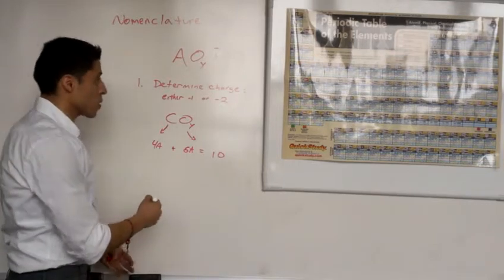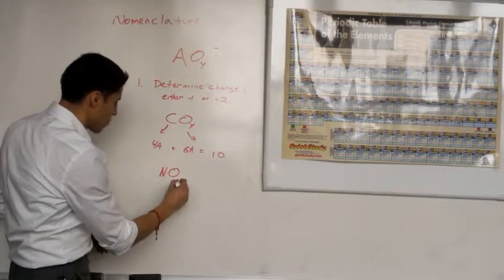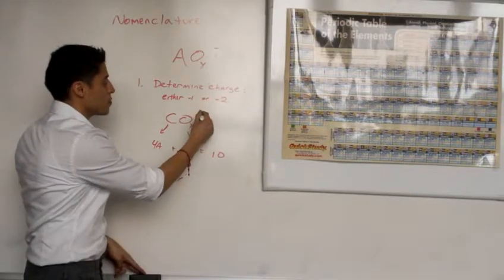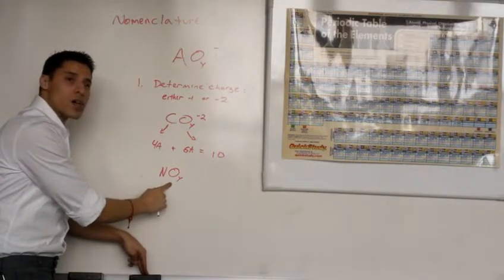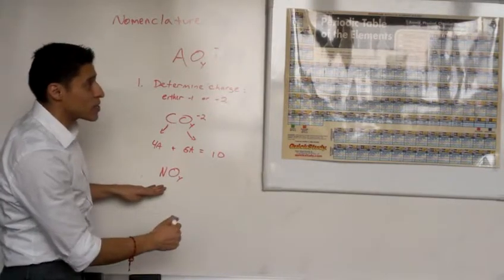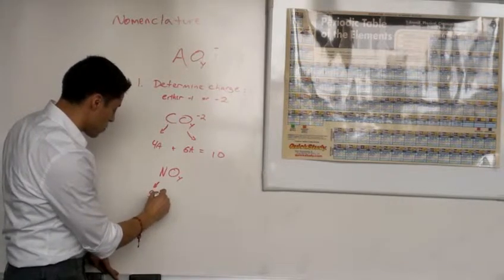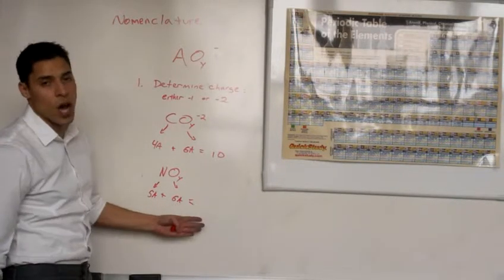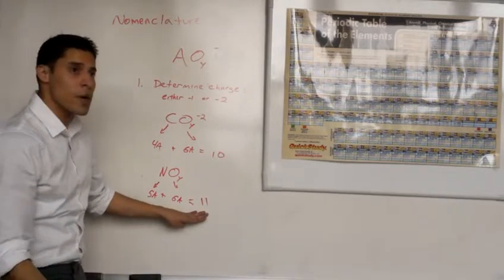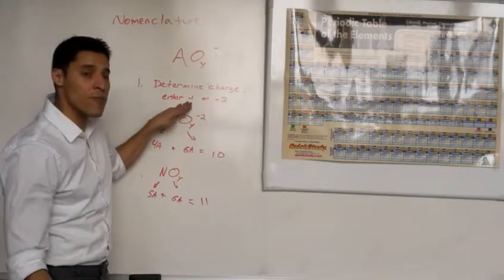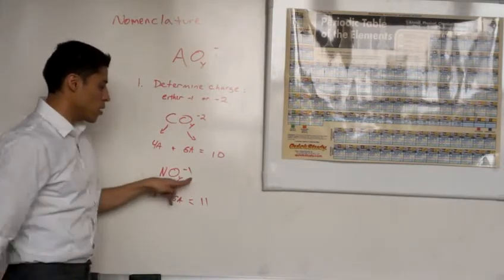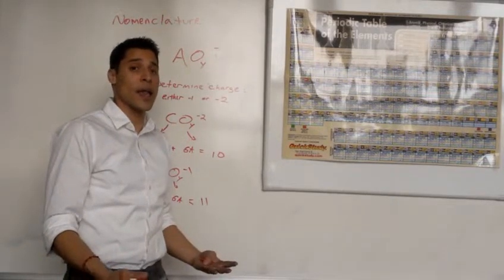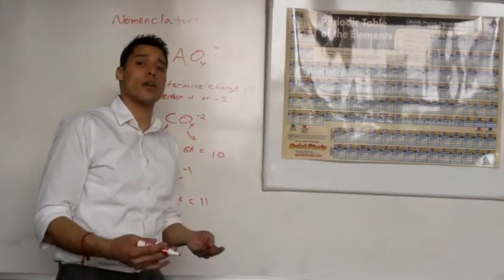For an odd number example, let's do nitrate. Nitrate is nitrogen bonded to a certain amount of oxygens with a charge. Nitrogen lands in the 5A group. We're going to add that to oxygen in the 6A group. That gives us an odd number sum, meaning an odd number charge. The odd charge here is negative 1. So nitrate will have a negative 1 charge.